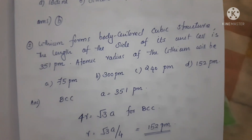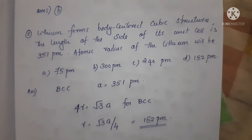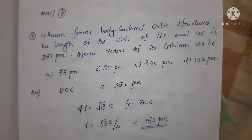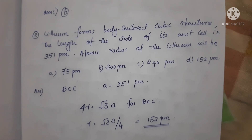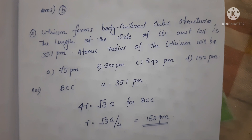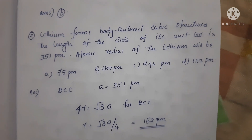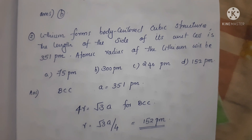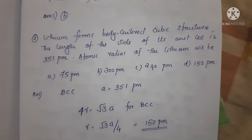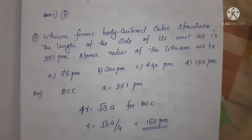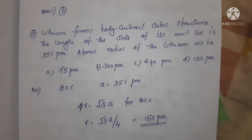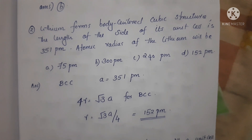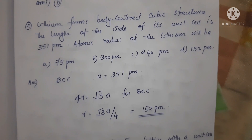Next question: Lithium forms a body-centered cubic structure. The length of the side of its unit cell is 351 picometers. What is the atomic radius of lithium? It is a BCC, body-centered cubic structure. Lithium forms a BCC structure and edge length A is 351 picometers.